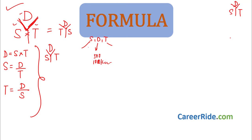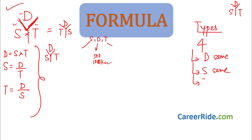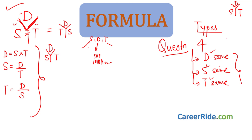Now let us look at the types of sums asked in the speed, distance, and time category. There are generally four types. The first category is where distance is the same. The second is where speed is the same. The third is where time is the same. No question will directly state which quantity is the same — you need to read the question and infer it. The fourth type is average speed. There is no average distance or average time concept; it is specifically average speed.